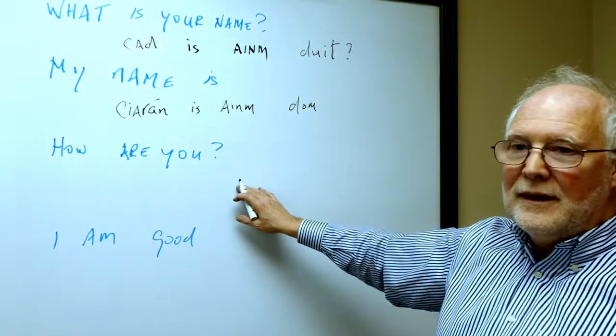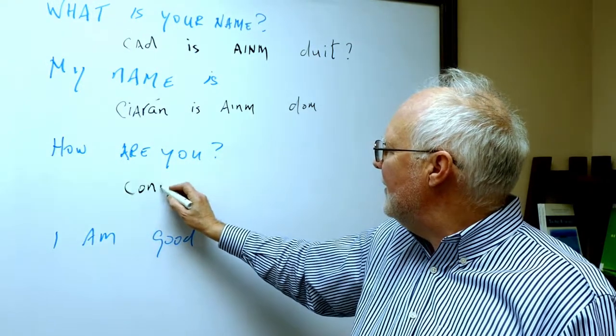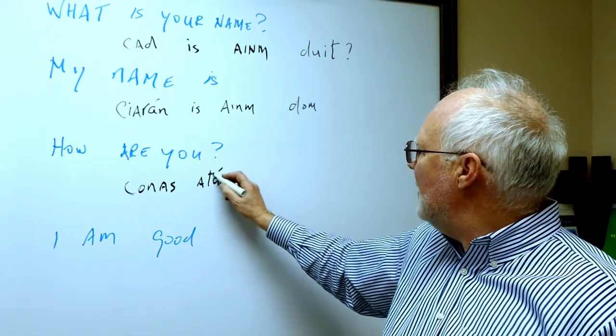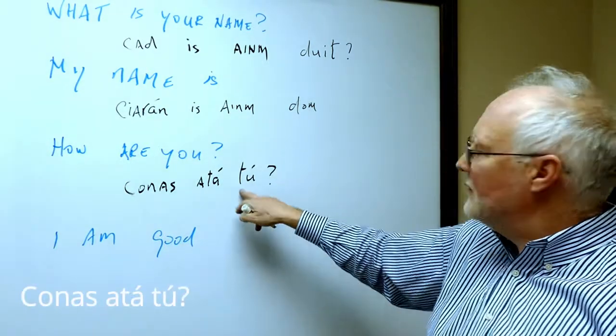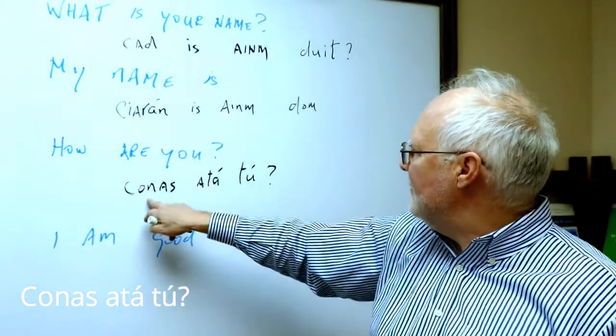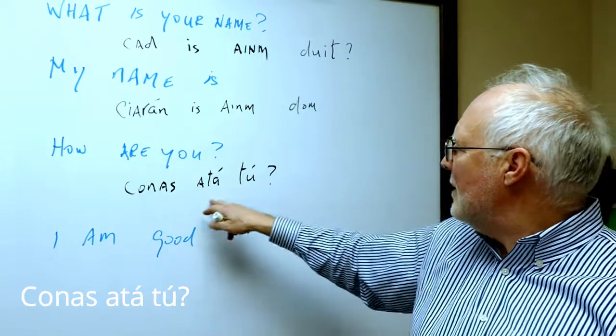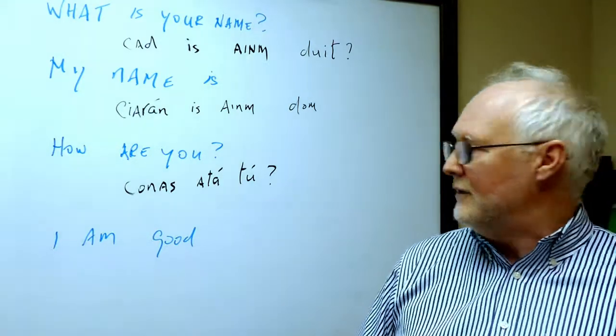How are you? Again, it's a question. So the first part is the question itself, Konos. And the verb to be, Ata. And of course you. That's the tu. The question, the verb, and you. Konos a ta tu. How are you? Konos a ta tu.